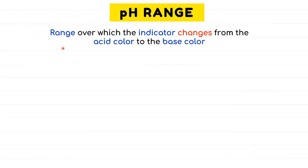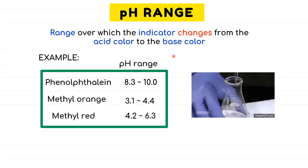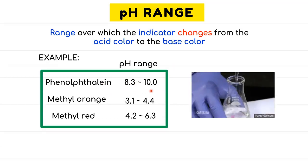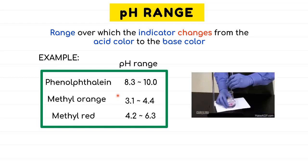The pH range is the range over which the indicator changes color from acid to base. It is determined from the type of salt formed. Here are examples of indicators and their pH ranges: phenolphthalein has a pH range of 8.3 to 10, methyl orange has a pH range of 3.1 to 4.4, and methyl red has a pH range of 4.2 to 6.3.